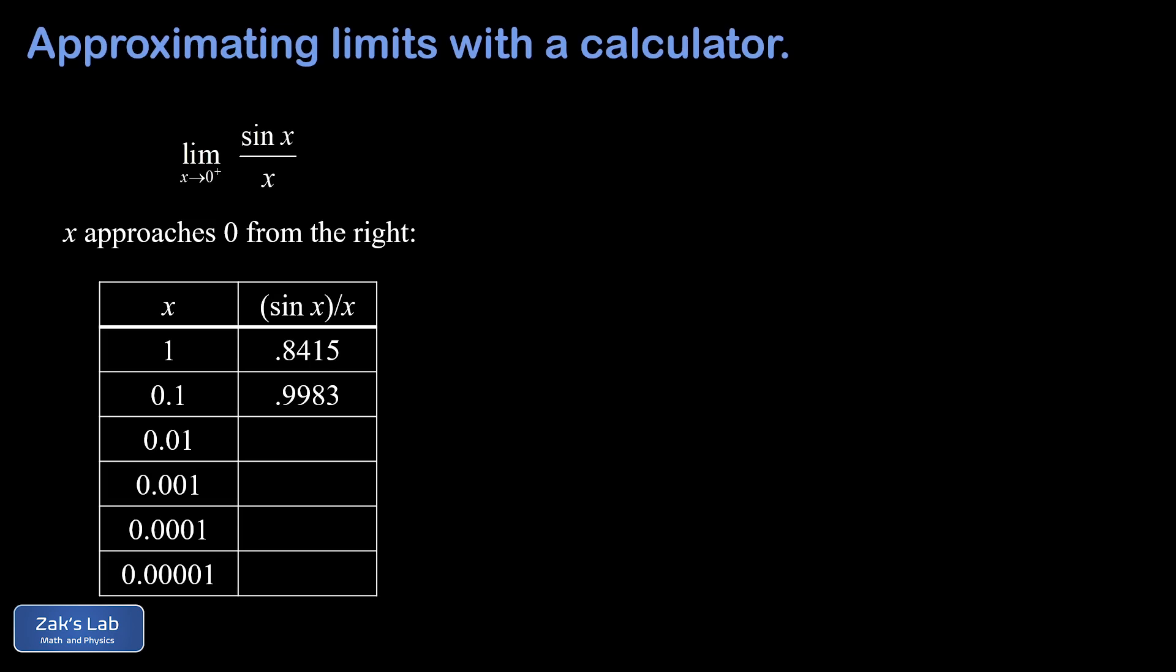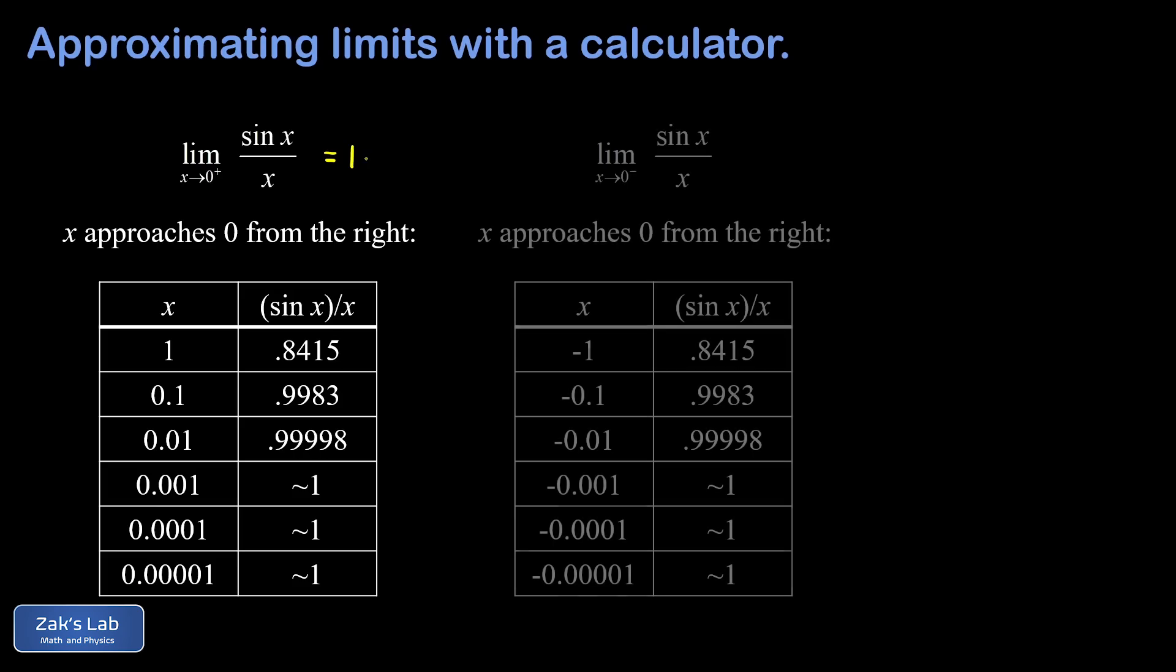And we continue this way. We compute sine 0.01 divided by 0.01, that gives us actually four nines in our decimal expression before we get to something that's not a nine, so we have 0.99998. And after that there are so many nines that I've just chosen to say approximately equal to one for the rest of those values. So we're getting a pretty clear picture from this: we find out that the value of the right sided limit of sine x over x as we approach zero is equal to one.